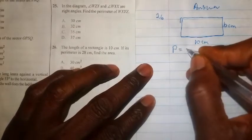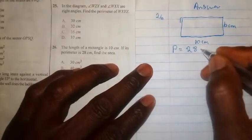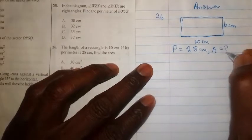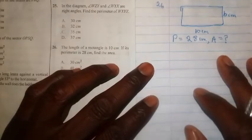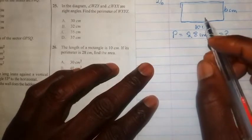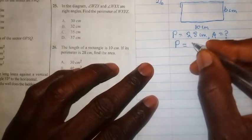The perimeter of the rectangle is given to us as 28 centimeters, and we are looking for the area. Now the first thing we are going to do here is to write out the formula for perimeter of a rectangle. The perimeter of a rectangle P has the formula P = 2(L + b).